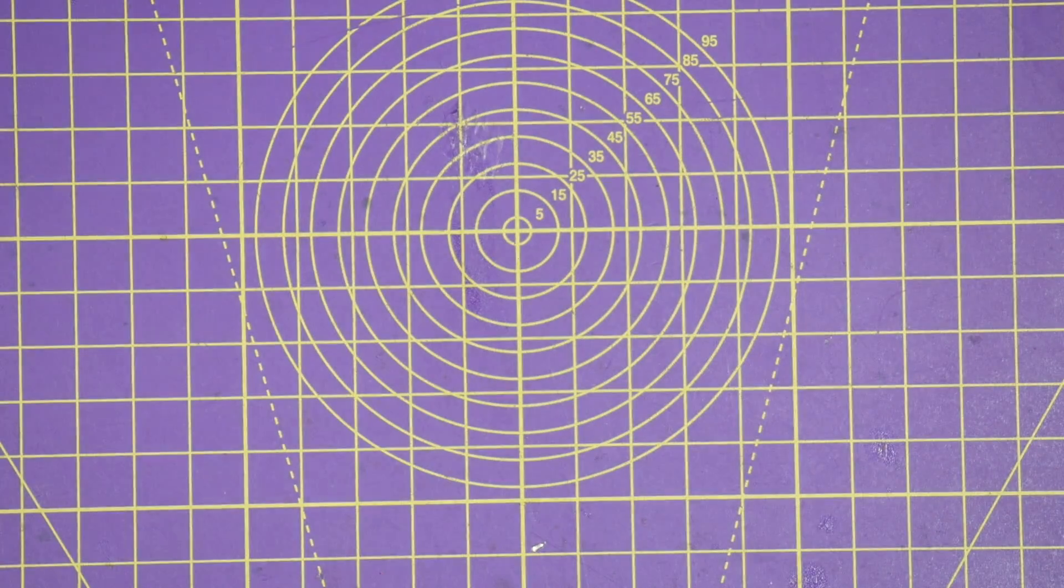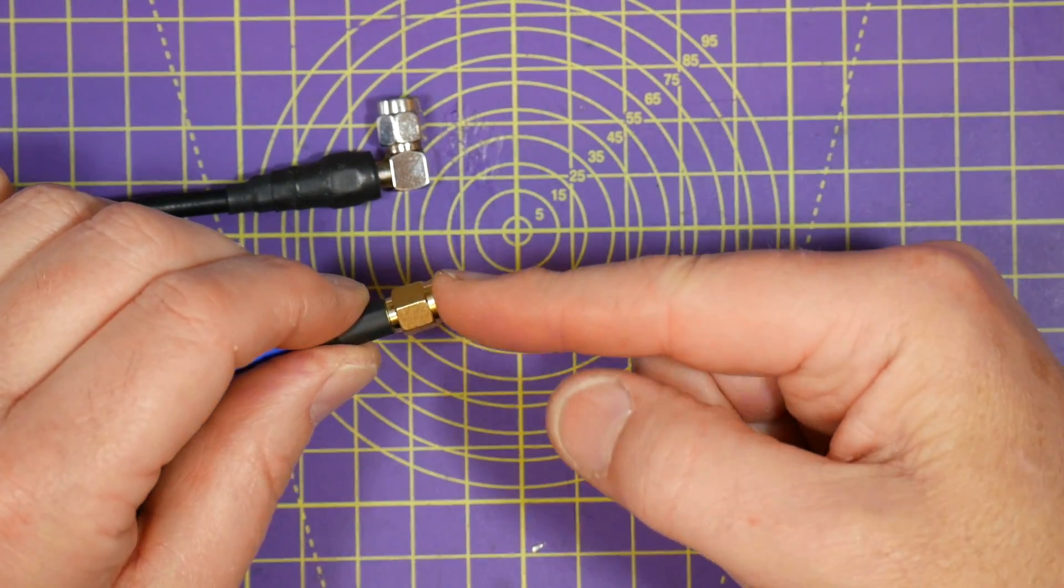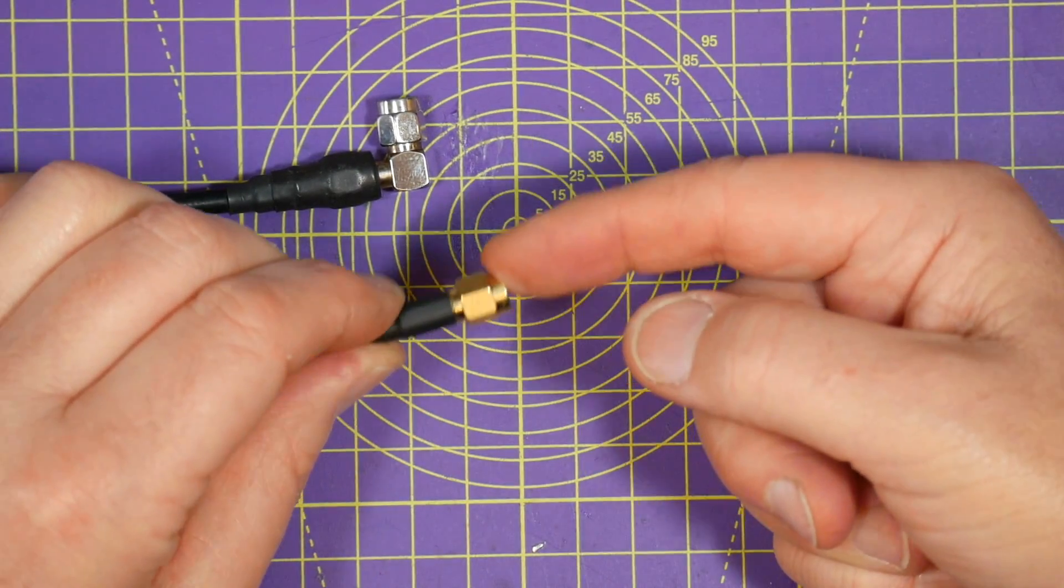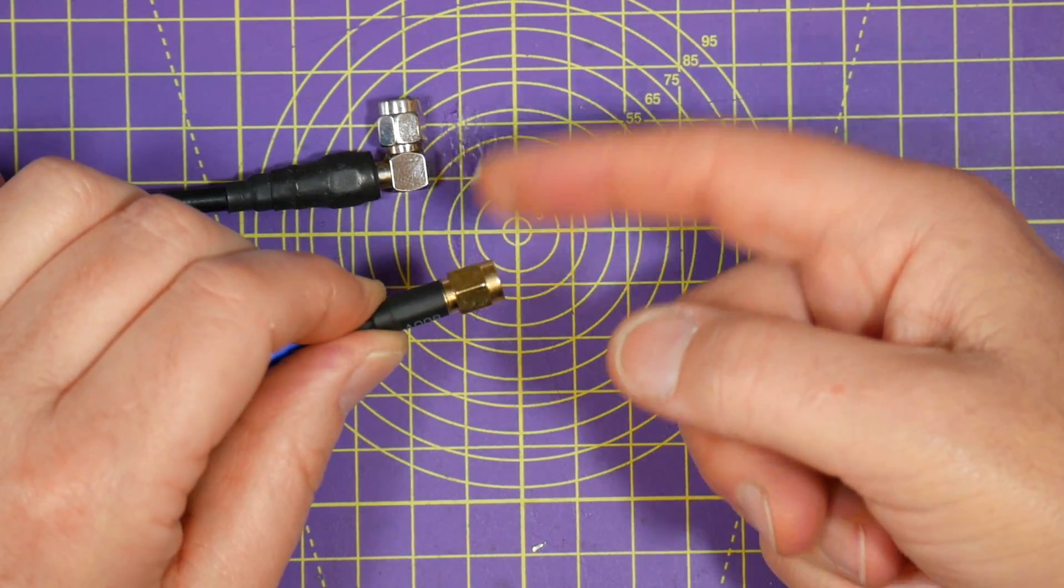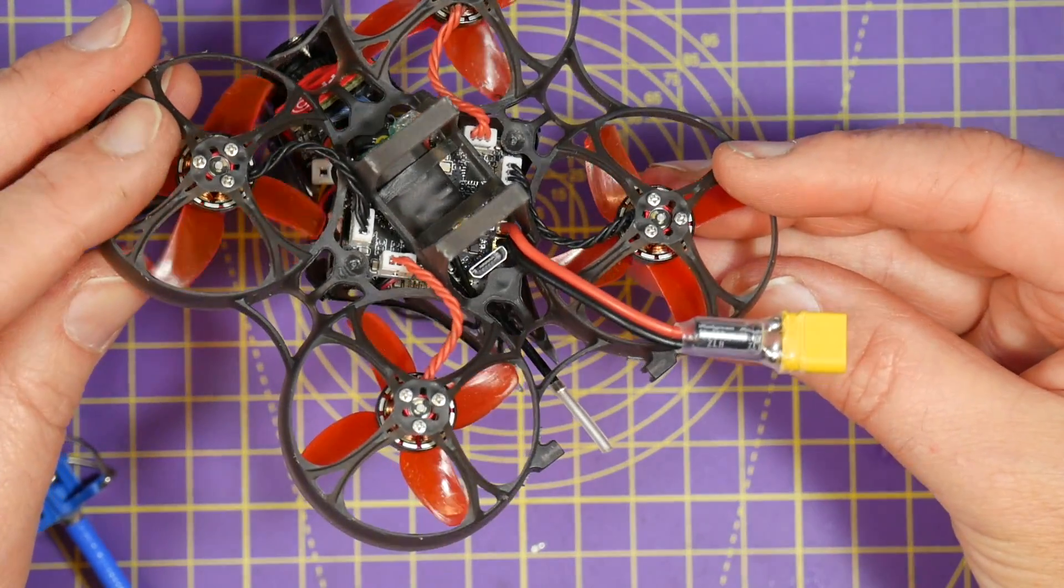The main disadvantage of SMA connectors is the weight. These connectors here are about 5 grams, which is a lot when you've got a lightweight racer or a mini quad. They're also relatively large, which can be a problem if you try to build something like this, a tiny whoop.